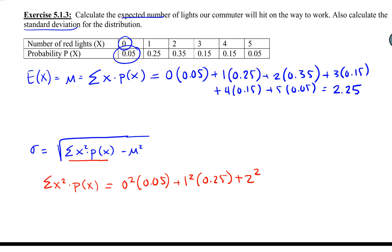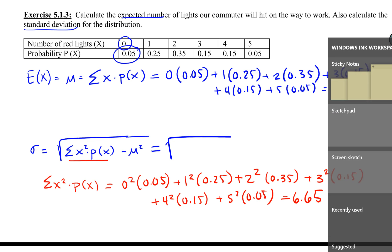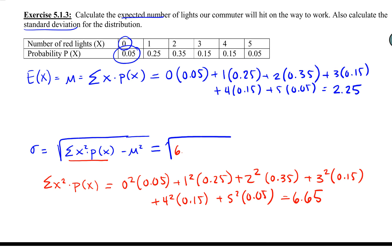That would be 0² × 0.05 plus 1² × 0.25 and so on. If you finish that summation on your own, you get 6.65. This was just a portion of what we needed. This is our summation.